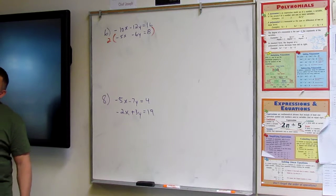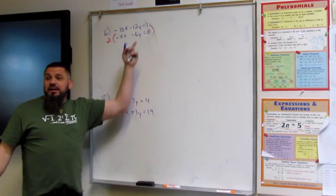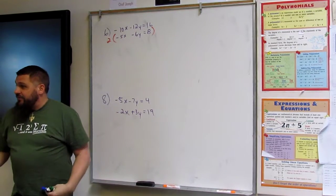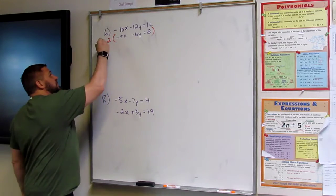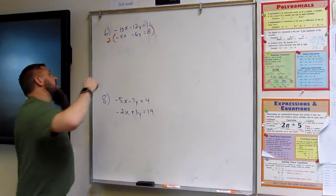Now we want them to be opposites, and right now they're the same, right? So we always have to multiply by a negative in order for them to be opposite. If they're the same, so it's going to be negative 2, good.